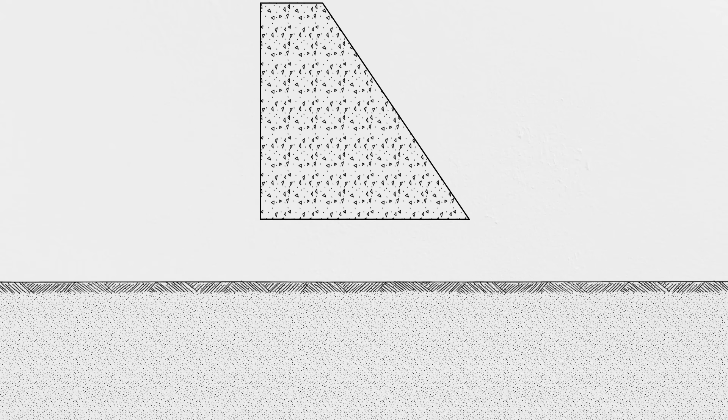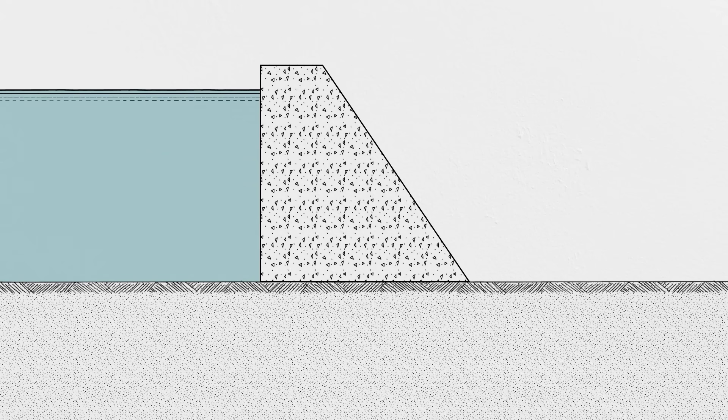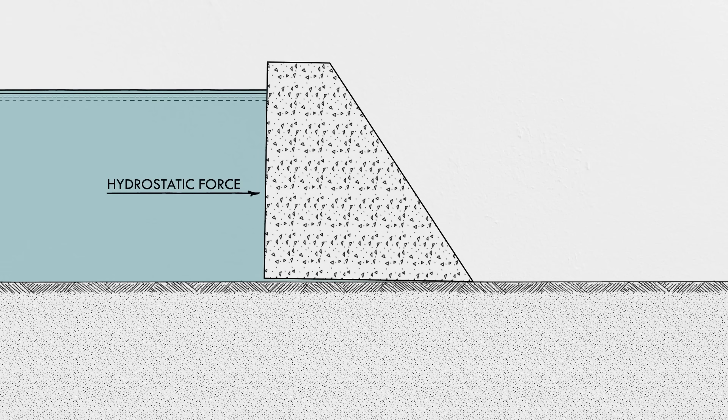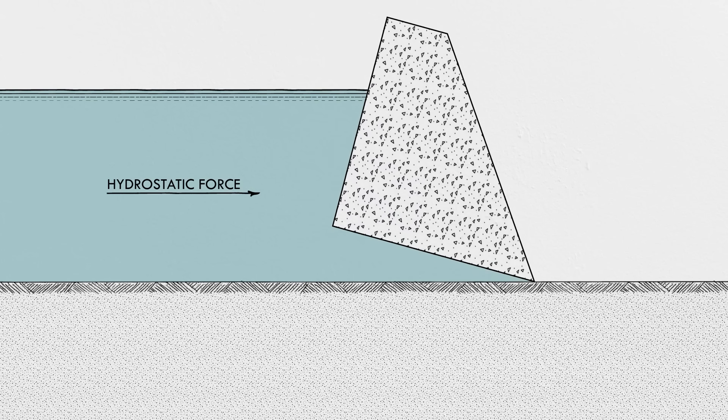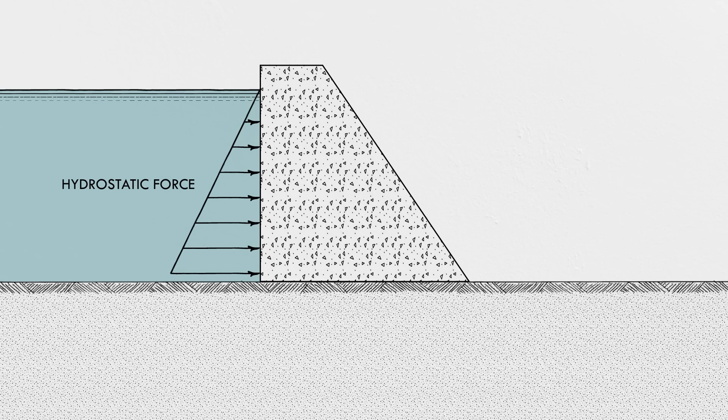The engineering of a dam is largely an exercise in resisting hydrostatic pressure. Water in the reservoir applies an enormous force to the upstream face of a dam, and if not designed properly, that force can cause the dam to slide downstream or overturn. The hydrostatic force is actually pretty simple to approximate. Pressure in a fluid increases with depth, so you get a triangular, distributed load. Once you know that load, you can design a structure to resist it.